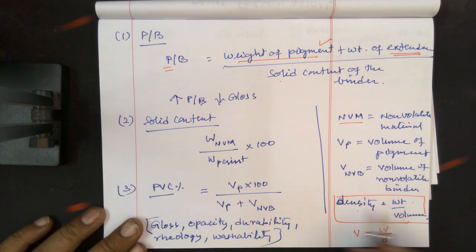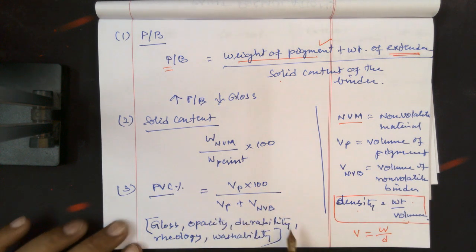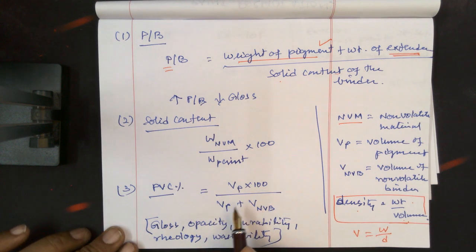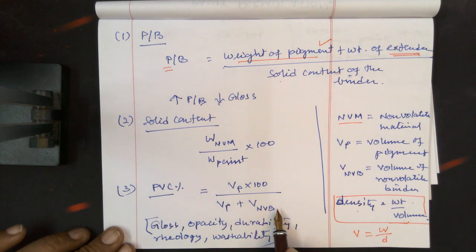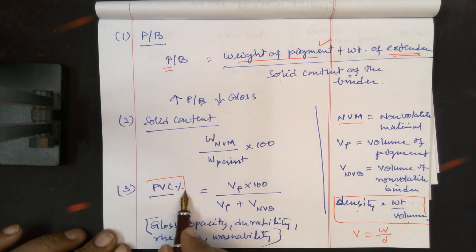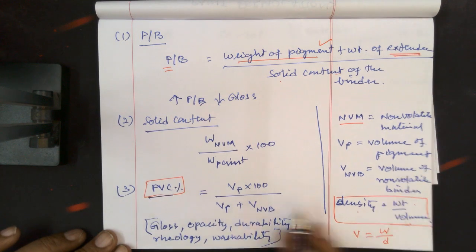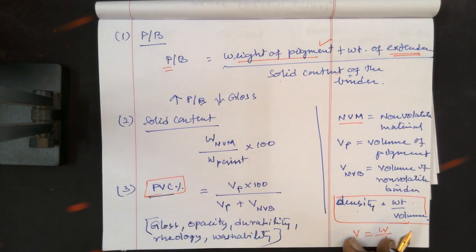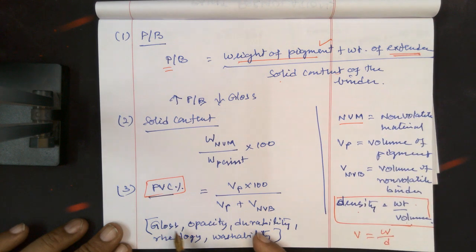The pigment volume concentration is volume of the pigment times 100 divided by the total volume of the pigment and non-volatile binder. We have to consider only the solid content of the binder. This is a very important parameter in paint formulation and describes the quality of the paint.